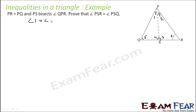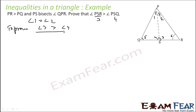To prove: angle PSR, which is angle 3, is greater than angle PSQ, which is angle 4. So to prove angle 3 is greater than angle 4. It is given that PR is greater than PQ. So the angle opposite to PR is angle 5, and angle 5 is greater than angle 6 — that is given.